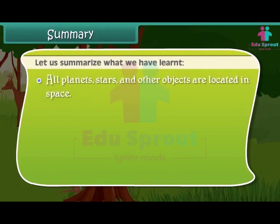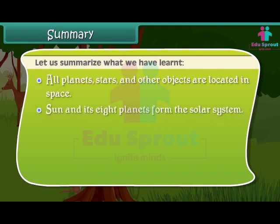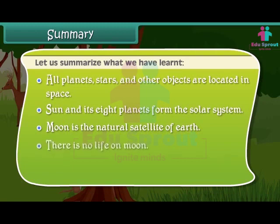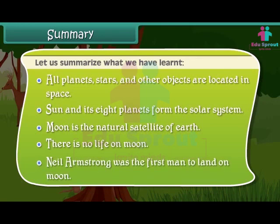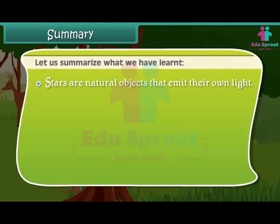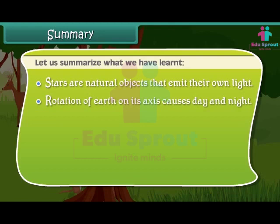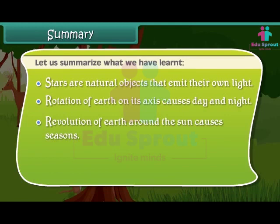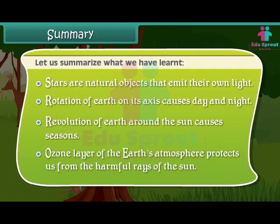Let us summarize what we have learned. All planets, stars and other objects are located in space. The sun and its eight planets form the solar system. The moon is the natural satellite of earth, and there is no life on moon. Neil Armstrong was the first man to land on the moon. Stars are natural objects that emit their own light. Rotation of earth on its axis causes day and night. Revolution of earth around the sun causes seasons. The ozone layer of the earth's atmosphere protects us from the harmful rays of the sun.